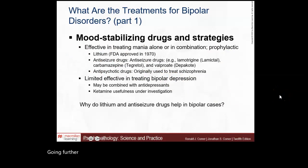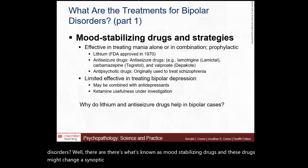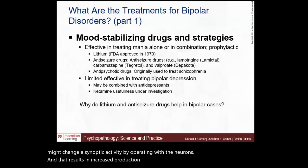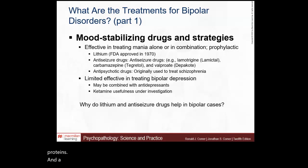Treatments for bipolar disorders include mood stabilizing drugs. These drugs may change synaptic activity by operating with neurons, resulting in increased production of brain-derived neurotrophic factor — proteins — and a reduction of bipolar symptoms by improving communications between key structures.